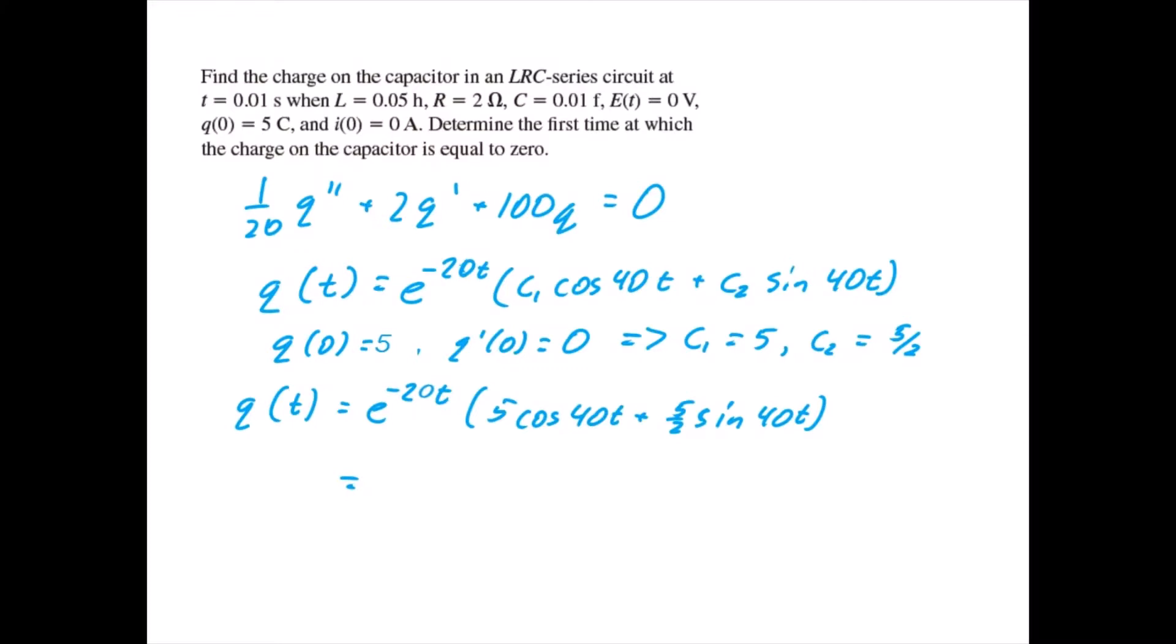Which we can rewrite as being 5 times the square root of 5 divided by 2 times e to the negative 20t times the sine of 40t plus 1.1071.